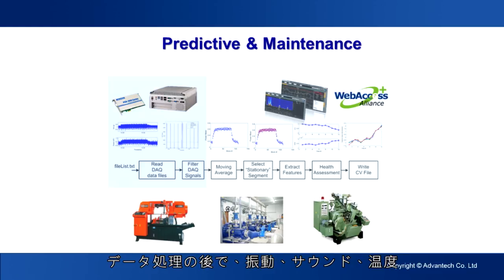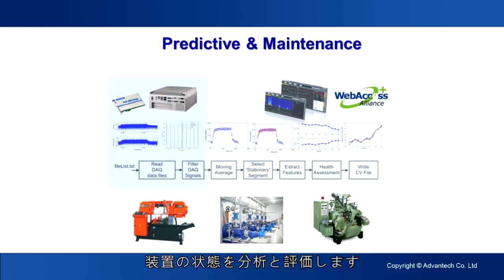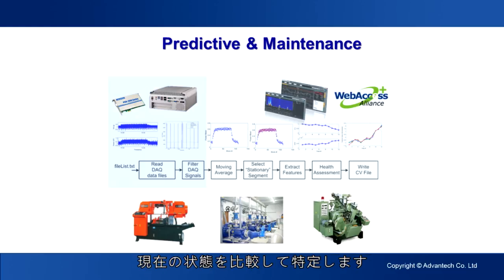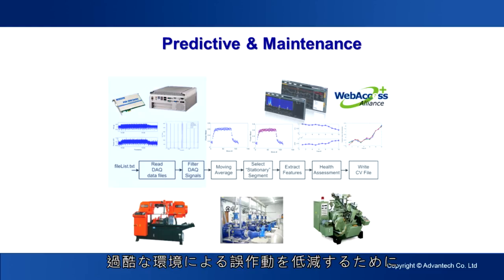After data processing, vibration, sound, temperature, and other raw data obtained from equipment can be extracted into several effective features. These extracted features are used for the analysis and evaluation of health status. The health of equipment is concluded by comparing the initial condition, standard condition, and current situation. The precision of data relies on measurement results from DAQ modules and reliable platforms. Advantech focuses on developing sound-friendly platforms to reduce malfunction caused by critical environments.